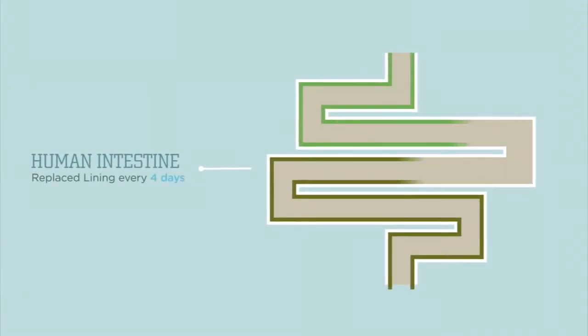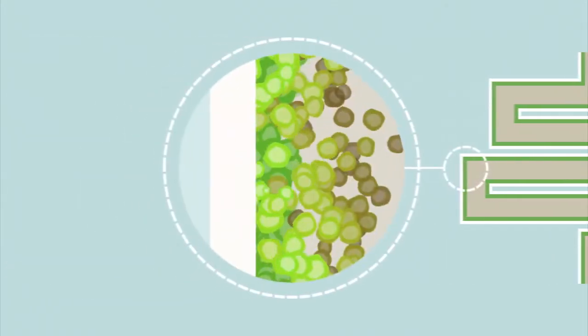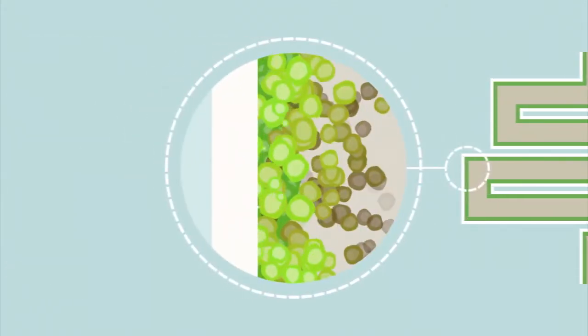For example, you completely replace the lining of your intestines every four days. Stem cells beneath the lining of your intestines replace these cells as they wear out.